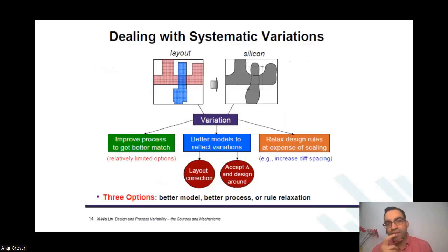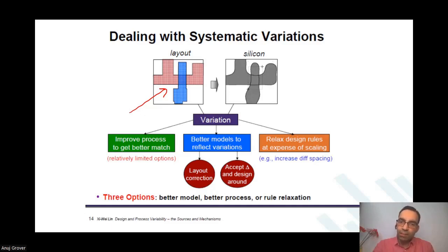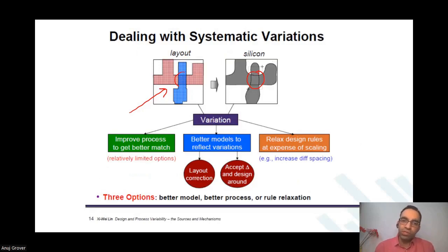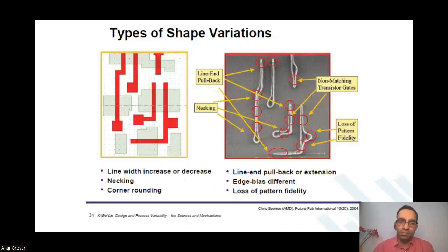This, for example, is an example of systematic variation. You made a layout like this. You know your process — specifically the resolution enhancement techniques you are using. Since you are aware of those resolution enhancement techniques, you can already make a simulator and find out that your gate region would actually be like this instead of the designed shape. To correct the situation, you can relax the design rules — increase the spacing between structures. As you do that, you will see that your design becomes more and more aligned to what you wanted it to be.